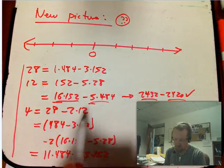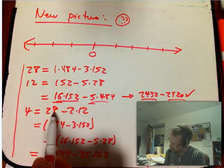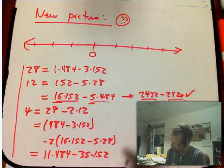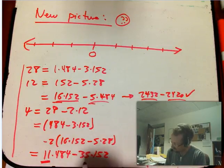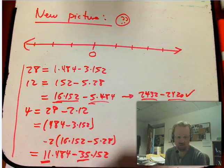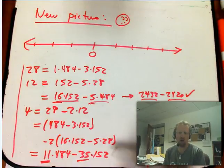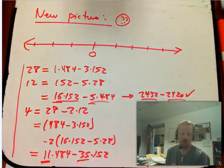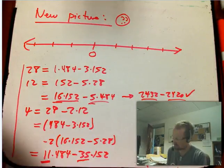4 then, you can solve the equation we had before as a combination of 28 and 12, well that's a combination again of 484 and 152. So it turns out to be 11 times 484 minus 35 times 152. And you're going to get a lot of practice in doing exactly this process, because it's what you actually do computationally to solve equations like this using the Euclidean algorithm.